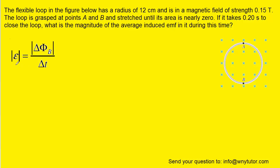We can see from this equation that the magnitude of the induced EMF is equal to the magnitude of the change in flux divided by the amount of time that has passed. And so we know that magnetic flux is equal to the magnetic field times the area of the loop times the cosine of some angle.